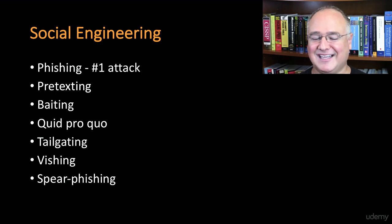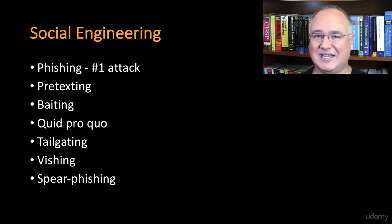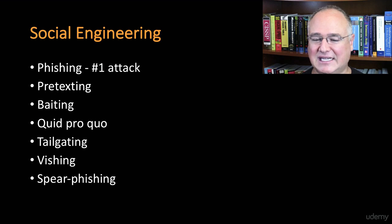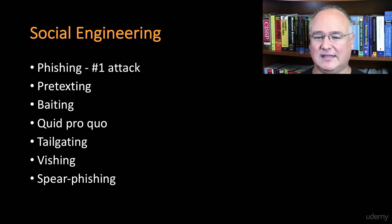Quid pro quo is a common social engineering technique — it means you'll get something if you do something for me. The Nigerian Prince email scams are a terrific — and terrible — example of this: 'If you help us get this money out of the country, we'll send you a portion of it.' Or it could be something as simple as, 'If you do this for me, I'll give you some information or some money.' Quid pro quo simply means this for that — something for something else.